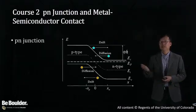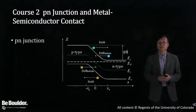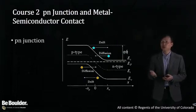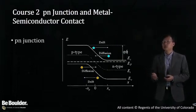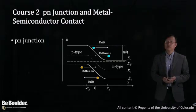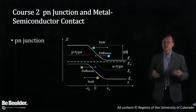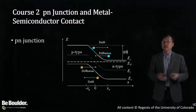Building on this theoretical framework, in course two we discuss diodes. First, p-n junction: what is a p-n junction, what is the device structure, and what are their key characteristics. We will also discuss what a Zener diode is.